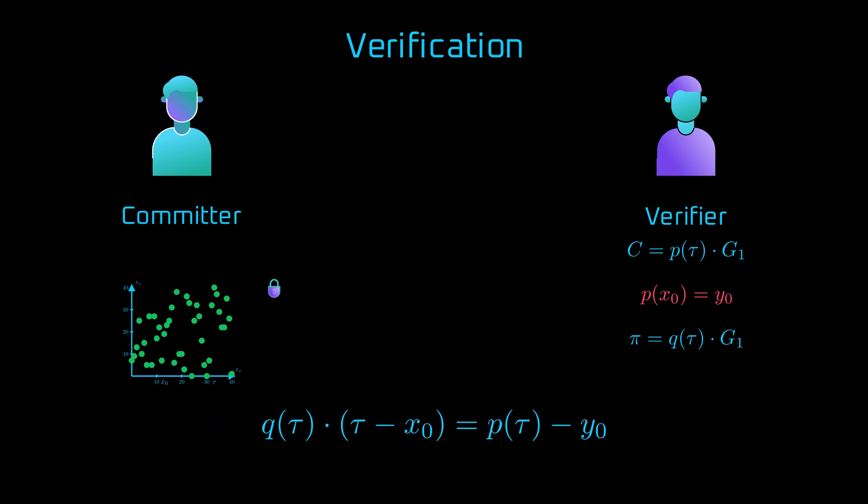So, we got something that resembles the very definition of the quotient, which was that it exists if the polynomial p of x minus y0 has a root at x0. And this condition should be correct for all x, so also for tau, which is the equation we got from the pairing verification.